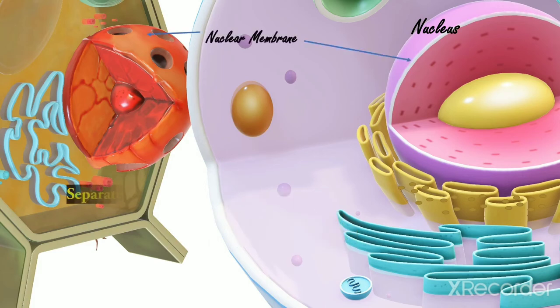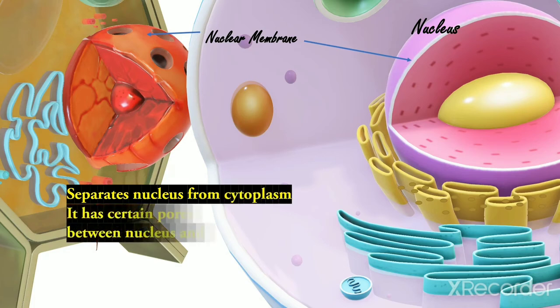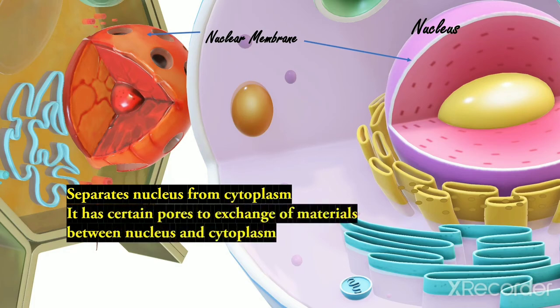One, Nuclear membrane. The membrane which separates the nucleus from cytoplasm. It has certain pores which allow the exchange of materials between nucleus and cytoplasm.